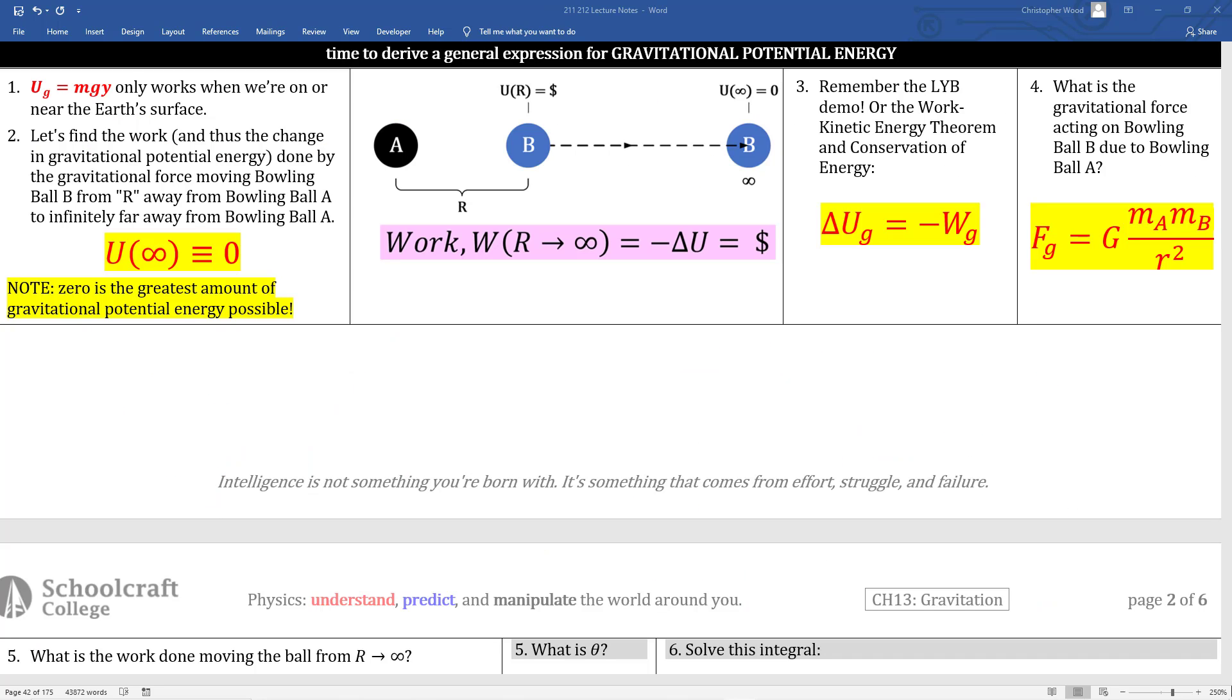Now we're going to derive a general expression for gravitational potential energy. We've been using UG equals MGY, but that only works on or near the earth's surface. Here's our scenario. We have two bowling balls, bowling ball A and bowling ball B. We analyze what happens when bowling ball B is moved from a position r away from bowling ball A to some position infinitely far away from bowling ball A. Here's our convention. The gravitational potential energy of two objects separated by an infinite distance is defined as zero. This seems like a strange convention. Zero is the greatest amount of gravitational potential energy possible. Two objects that are separated by a distance less than infinity will have some negative value for their gravitational potential energy.